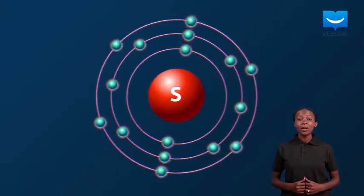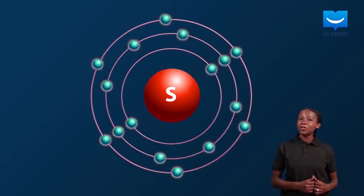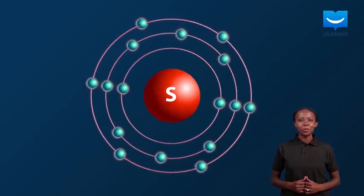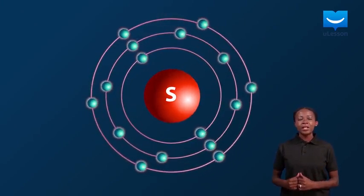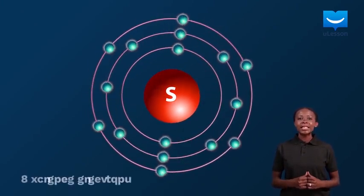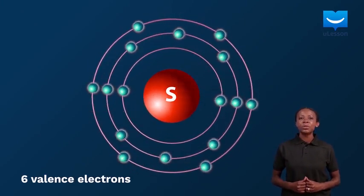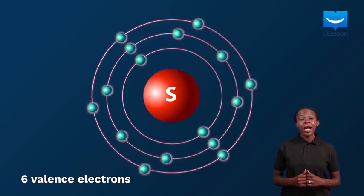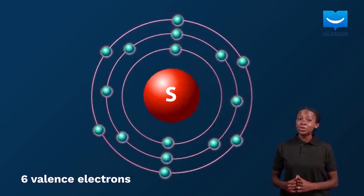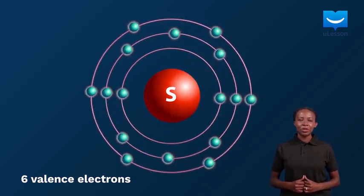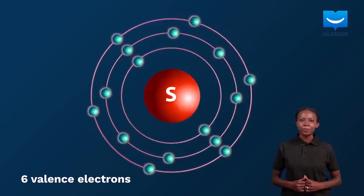Like oxygen, which is the first element in group 6, sulfur has 6 valence electrons in its outermost shell and requires 2 electrons to complete its outermost shell.